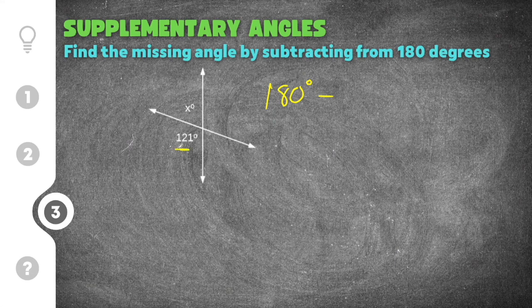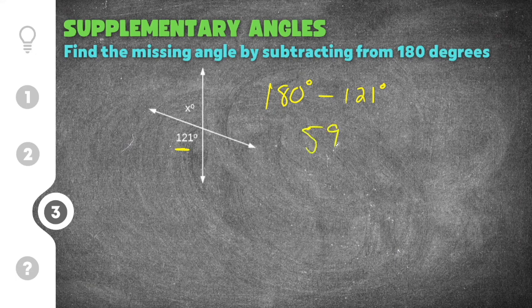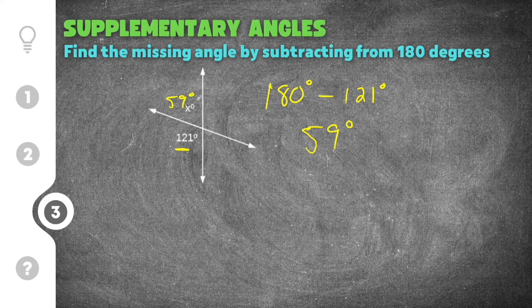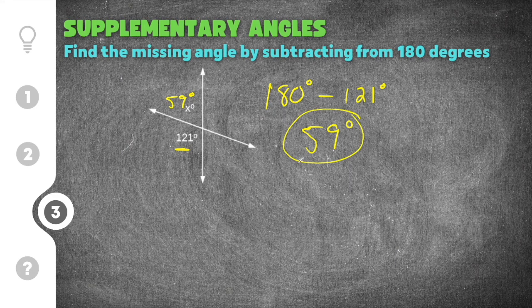So we're going to say 180 minus the angle we know which is 121. And when you subtract those two you will get 59 degrees.